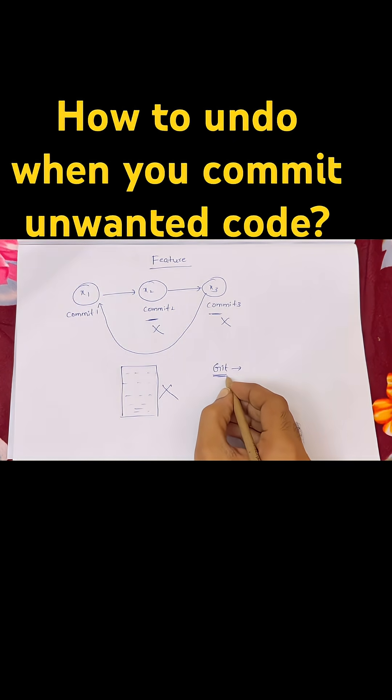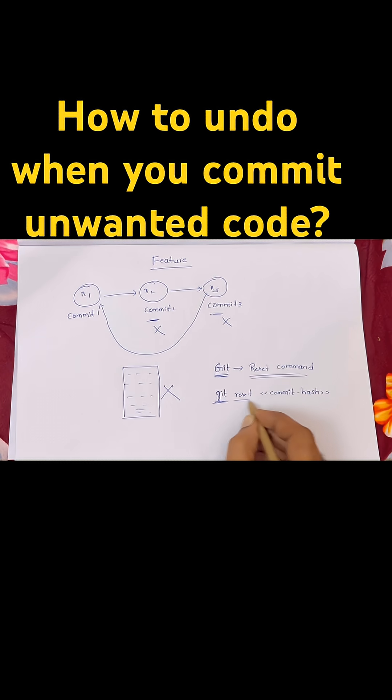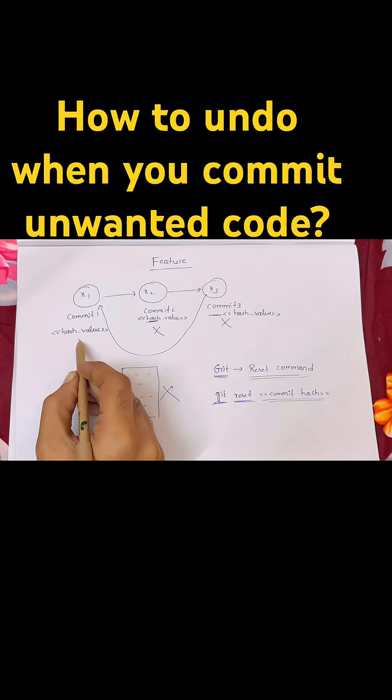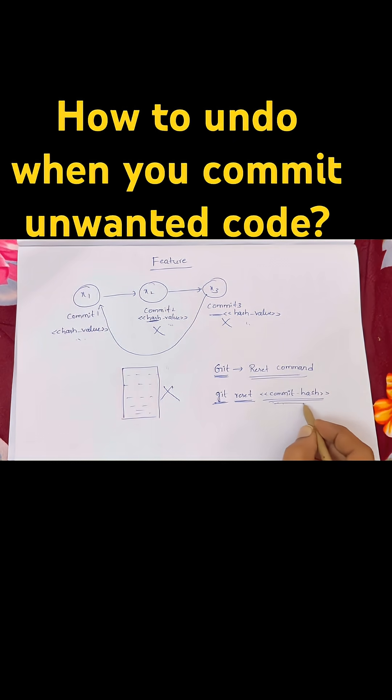In git we have a command to go back to previous commit, that is reset command. Git reset followed by commit hash. Git stores unique hash value for each commit. Here we have to give the hash value of commit to which we want to go back to.